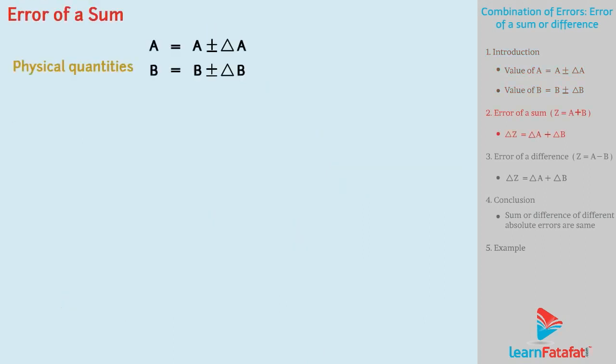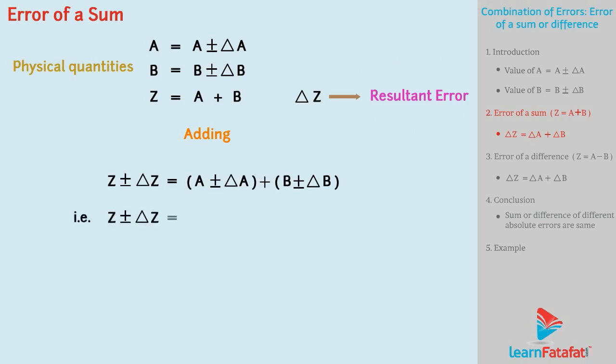Let's find error of a sum. Take the third quantity Z such that Z equals A plus B, for which ΔZ is the resultant error due to sum of errors. Now, adding the two physical quantities, we get Z ± ΔZ = (A ± ΔA) + (B ± ΔB). That is, Z ± ΔZ = (A + B) ± (ΔA + ΔB). So, the maximum possible error ΔZ = ΔA + ΔB. Let's call this equation 1.